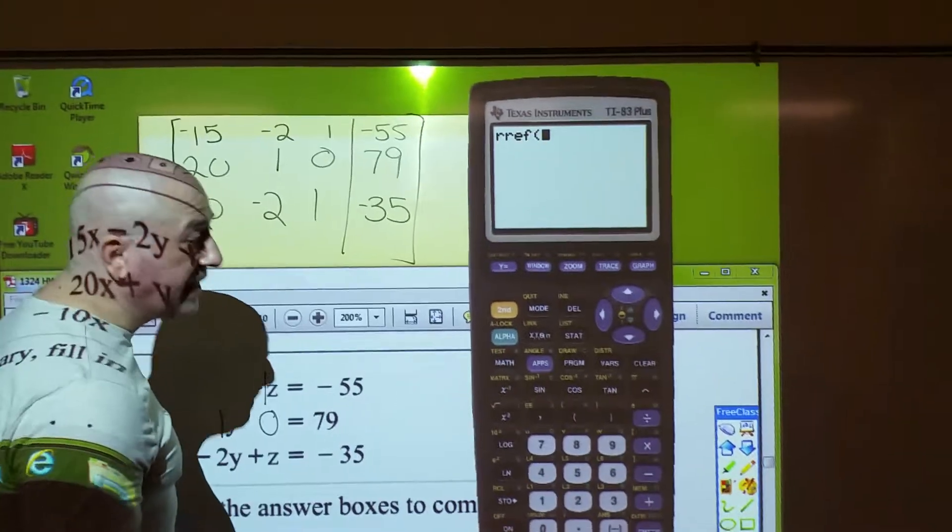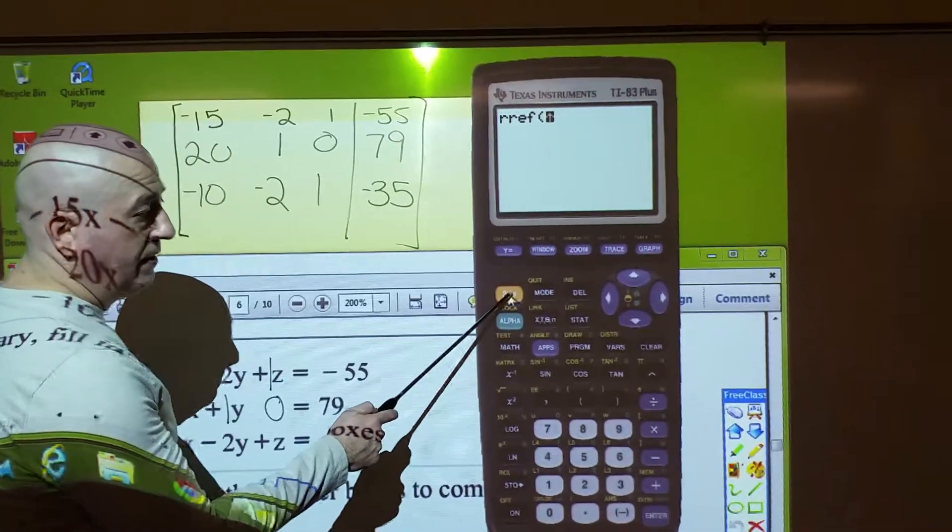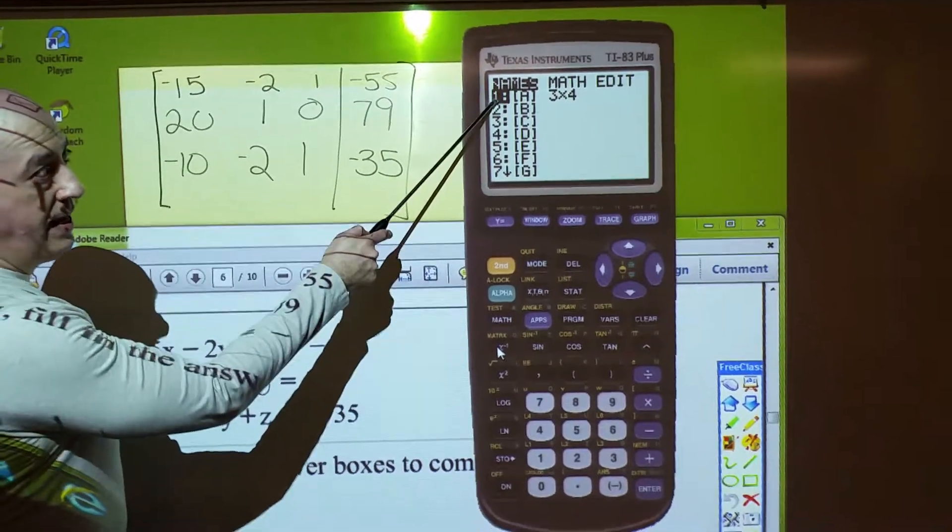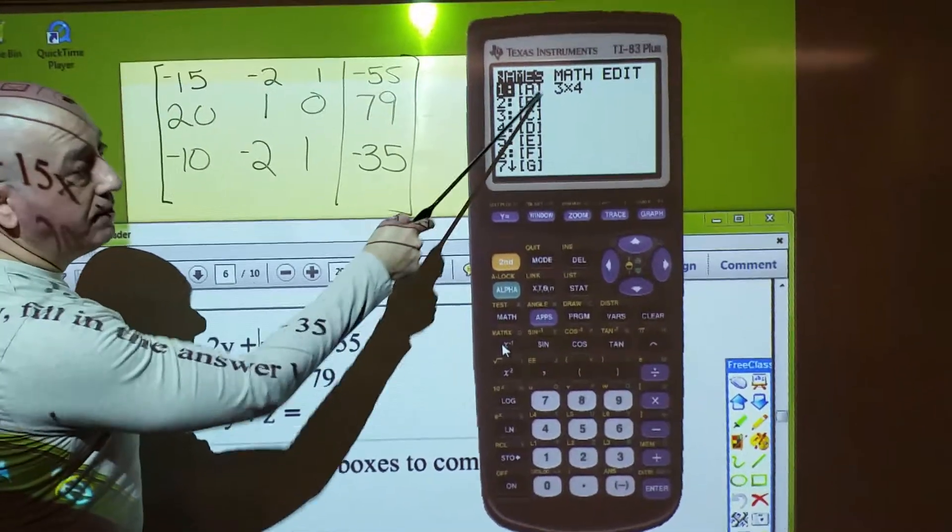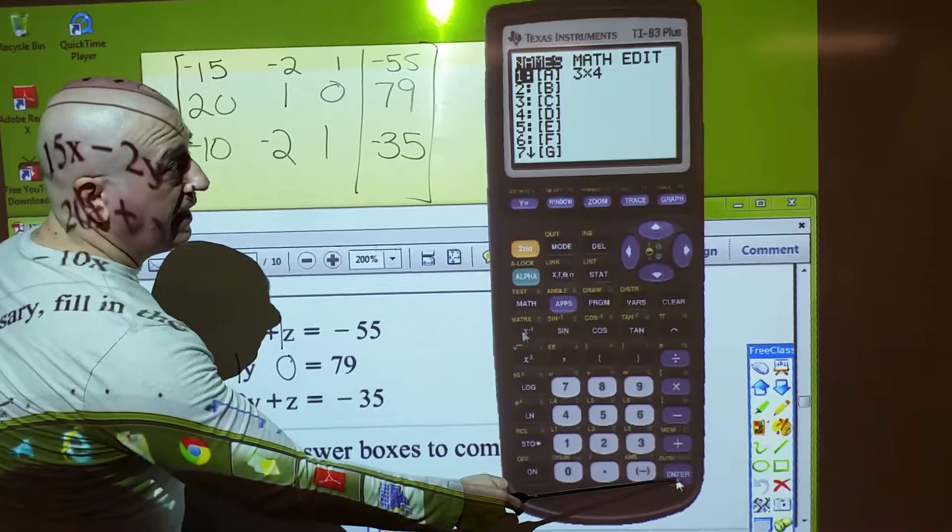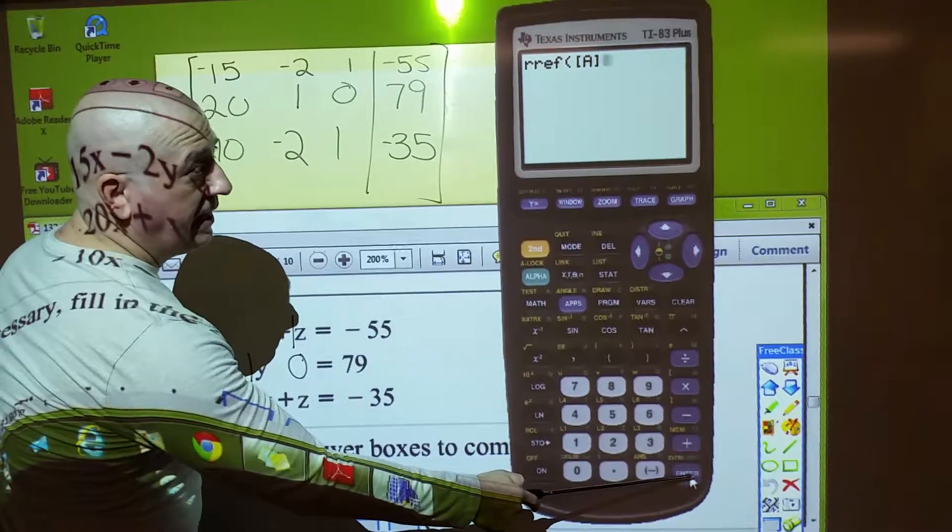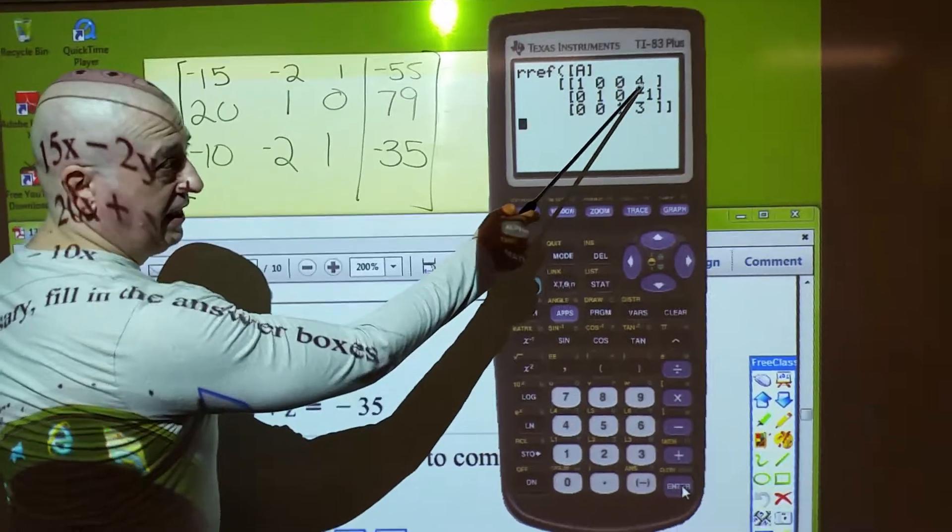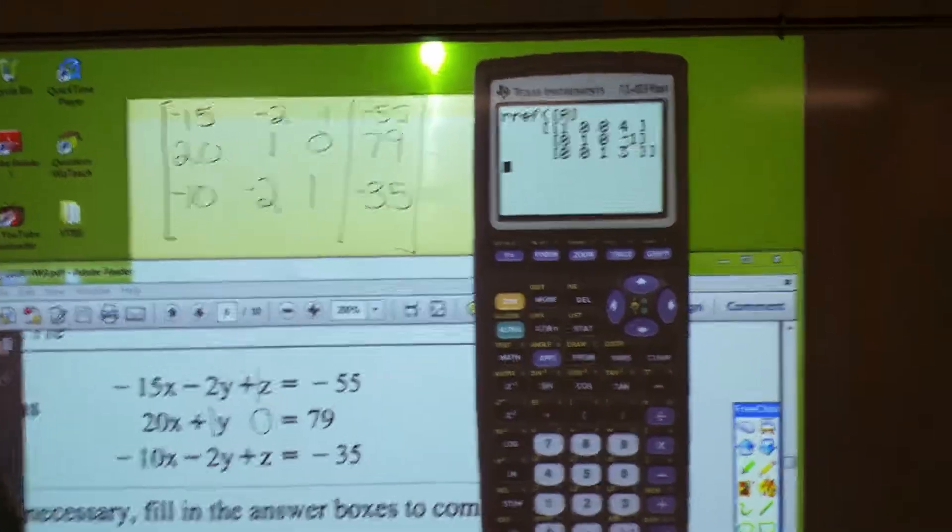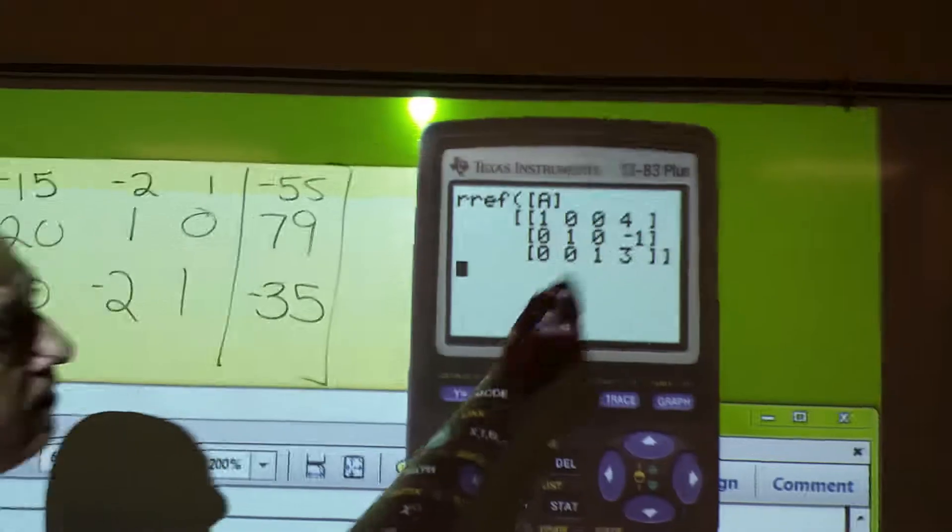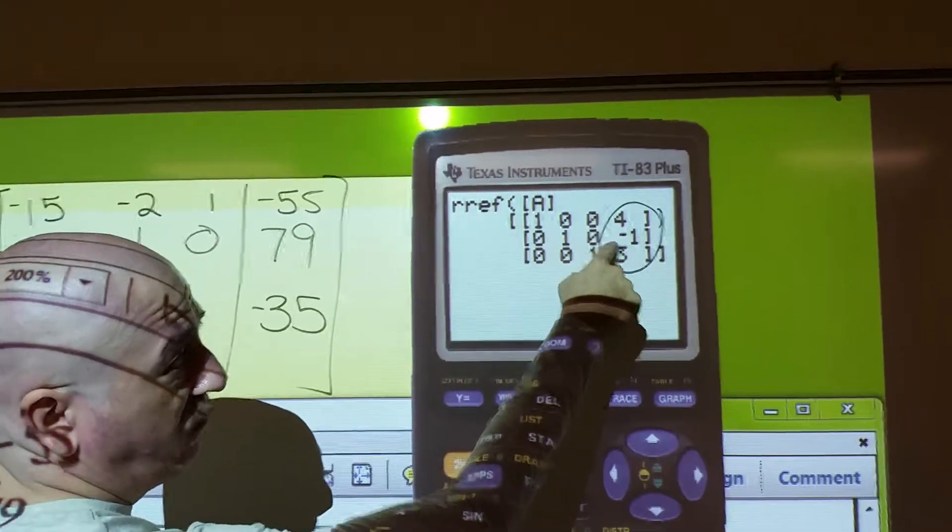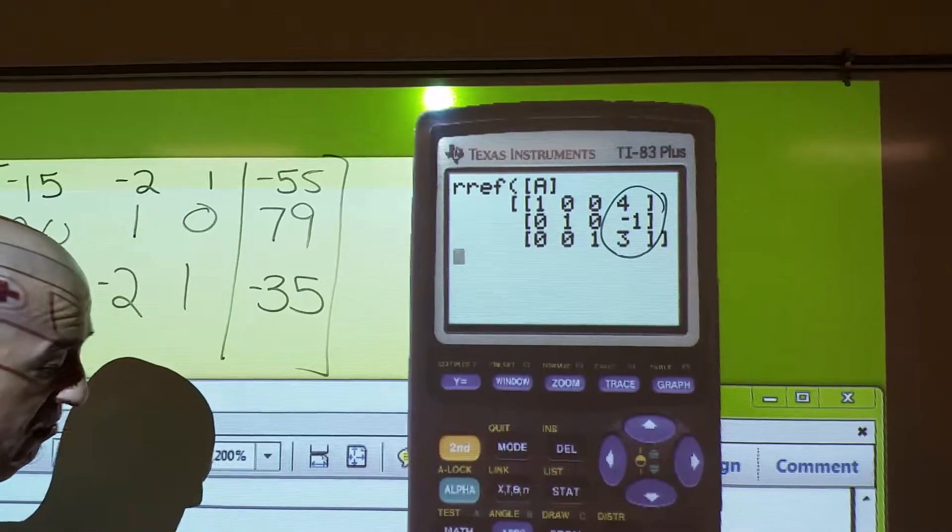Now, I need that matrix A. So, second, matrix. Now, I'm just entering the name matrix A. Hit enter, and there it is. The solutions. Can y'all see that? X is 4, Y is negative 1, Z is 3.